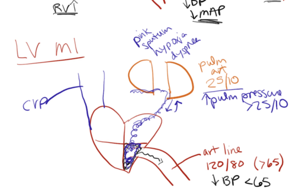So with a left ventricular MI, blood isn't pumping out and arterial pressure is low. Instead the blood backs up and we get high pulmonary arterial pressures. This is one scenario in which you might see flash pulmonary edema from an acute left ventricular MI — all of a sudden the left ventricle stops working, blood can't flow forward so it backs up and you get pulmonary edema flooding your lungs.